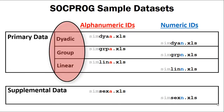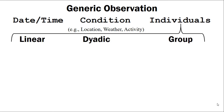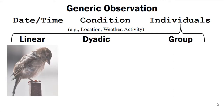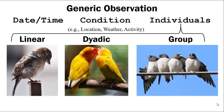Sockprog accepts data in three modes: linear, dyadic, and group. Any observation regardless of mode begins with the date and time it was collected, followed by the conditions such as location or behavior. Finally we have the individuals observed. What differentiates the three modes is how individuals are recorded. In linear mode there is only one individual per observation. In dyadic mode each observation has exactly two individuals. In group mode all members in a group are recorded on the same line.